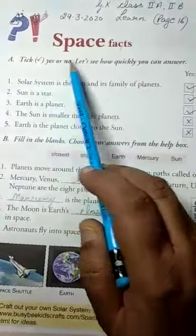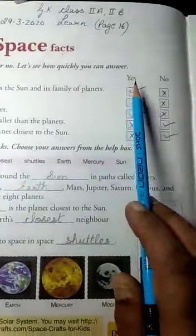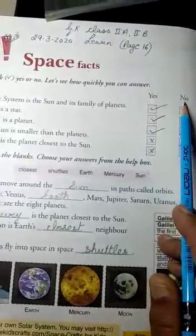Tick yes or no and let's see how quickly you can answer. There is a statement given here and you have to put a tick mark in the yes column or in the no column.